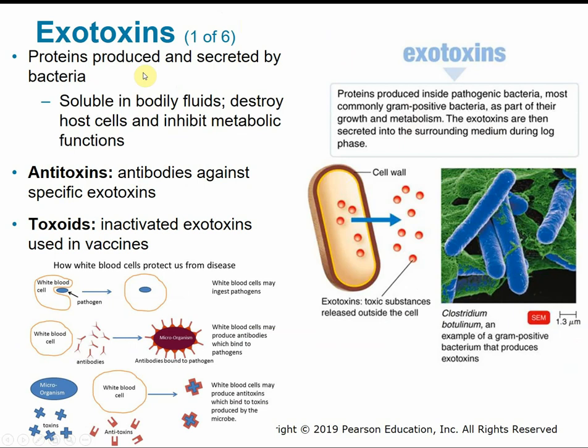Exotoxins are proteins produced and secreted by bacteria, mostly gram-positive bacteria. They are generally soluble in body fluids and can destroy host cells or inhibit metabolic functions. Antitoxins are antibodies against specific exotoxins — they bind to the toxin and render it ineffective so it can't contact other cells. Toxoids are inactivated exotoxins used in vaccines, like the tetanus vaccine.